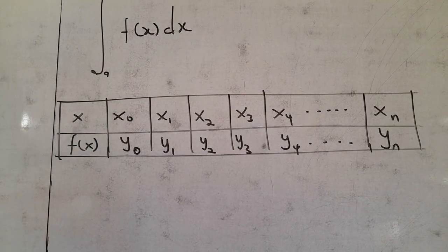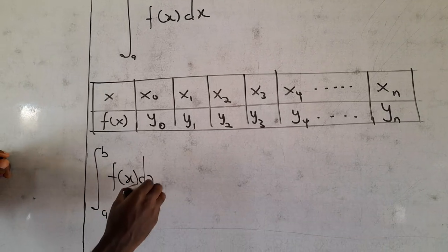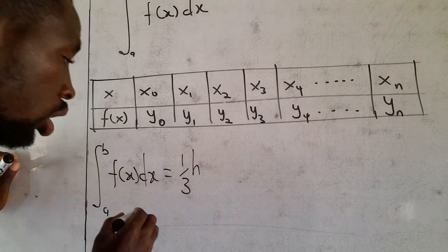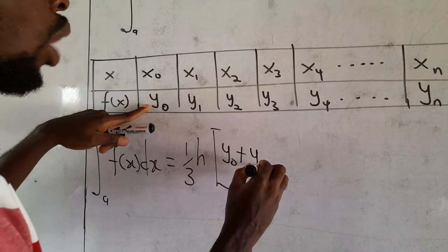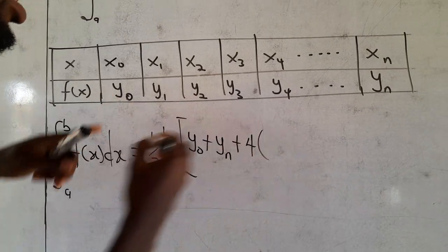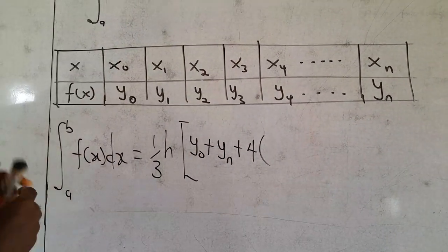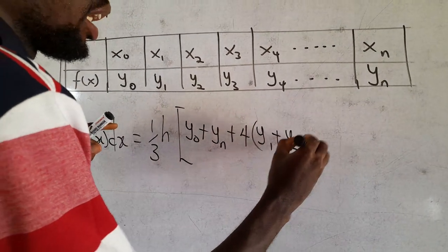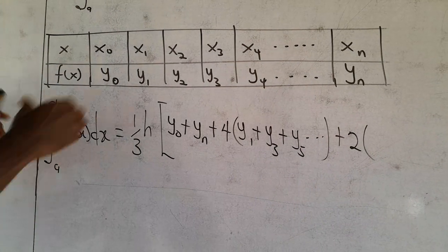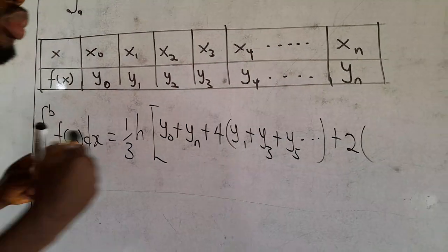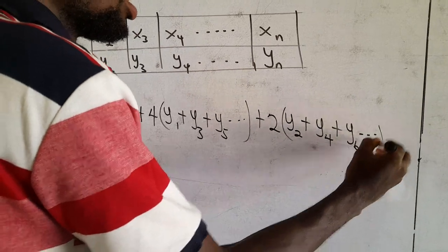Then Simpson's 1/3 rule states that our integral from A to B of f(x) dx will be equal to (1/3)h times: the first value y₀ plus the last value yₙ, then plus 4 times all odd-position values of y — that's y₁ plus y₃ plus y₅ in order — then plus 2 times all even-position values of y.